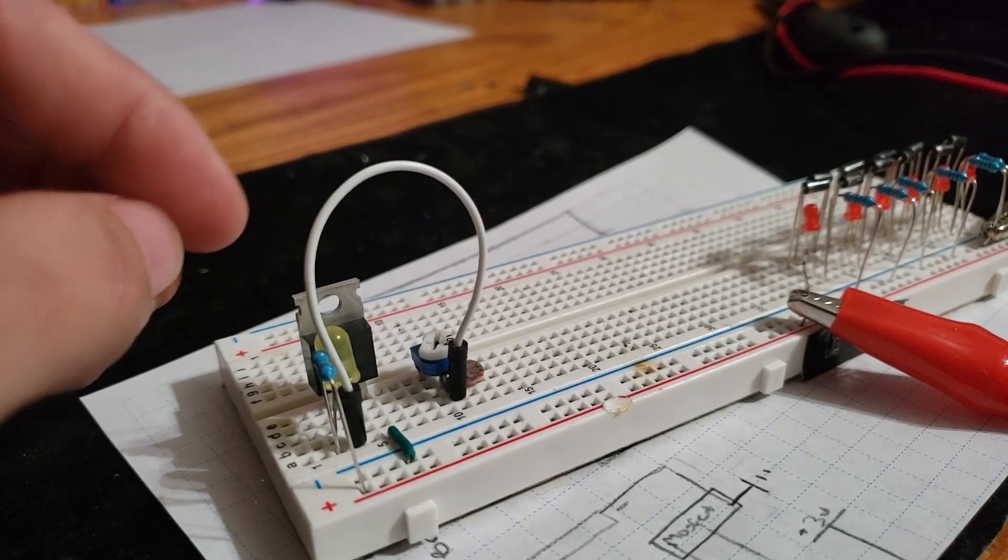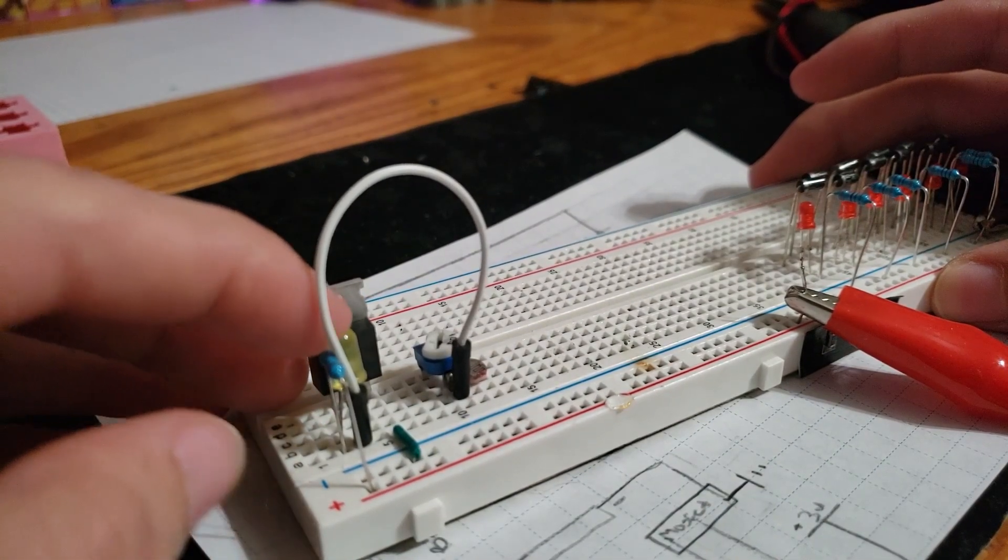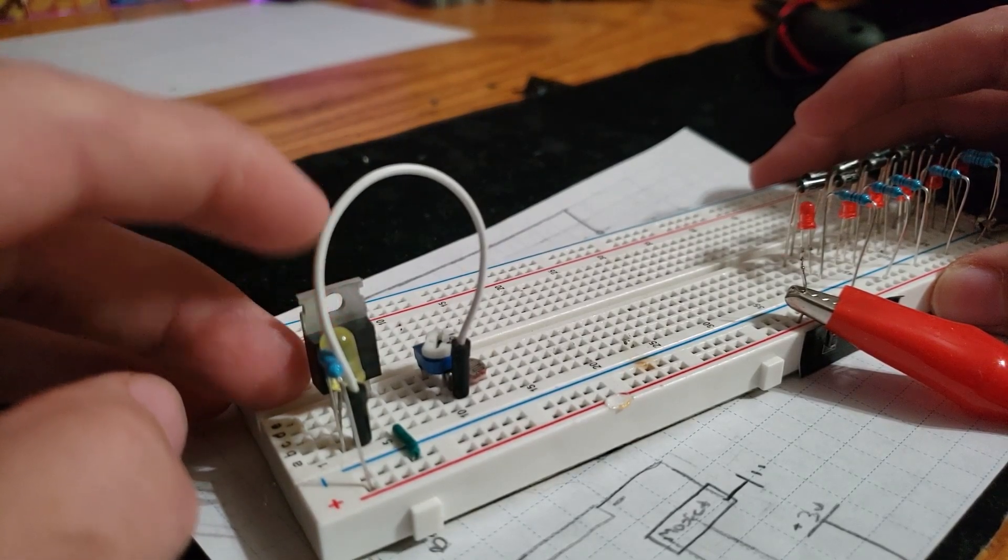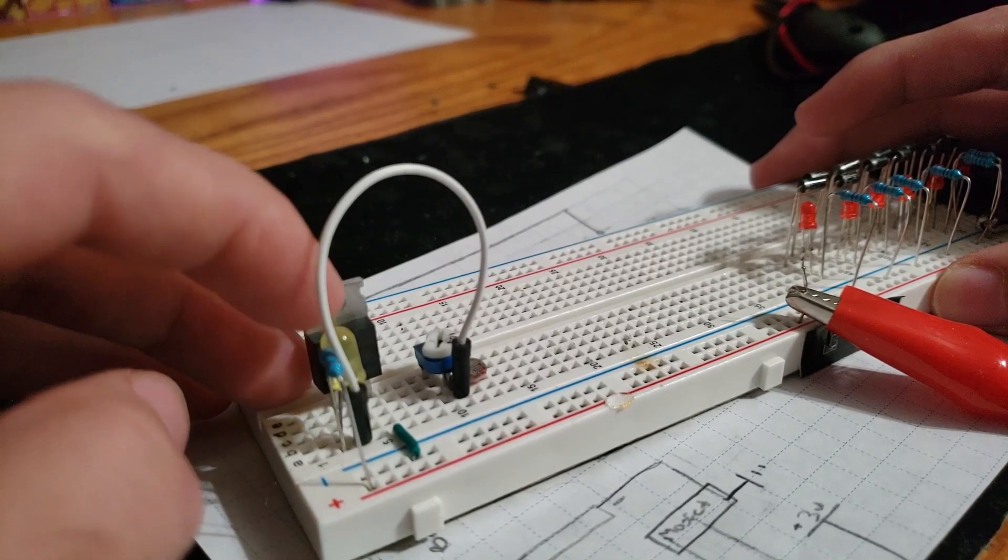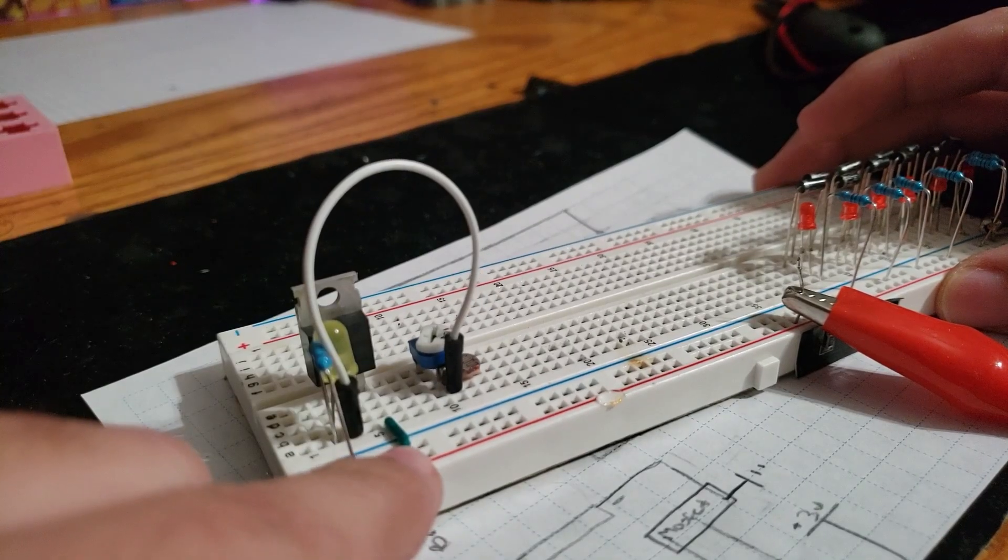So here's the circuit on the breadboard. Here's a 100 ohm resistor connected to the LED. The ground of the LED is connected to the middle pin of the MOSFET. And the ground of the MOSFET is connected down to the ground here, this green jumper wire.